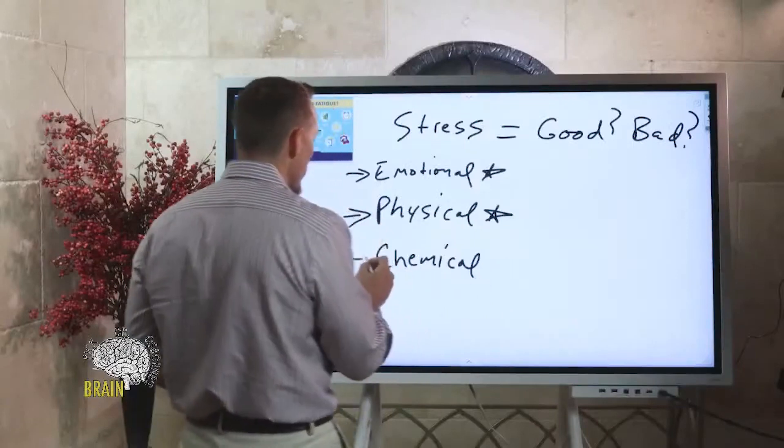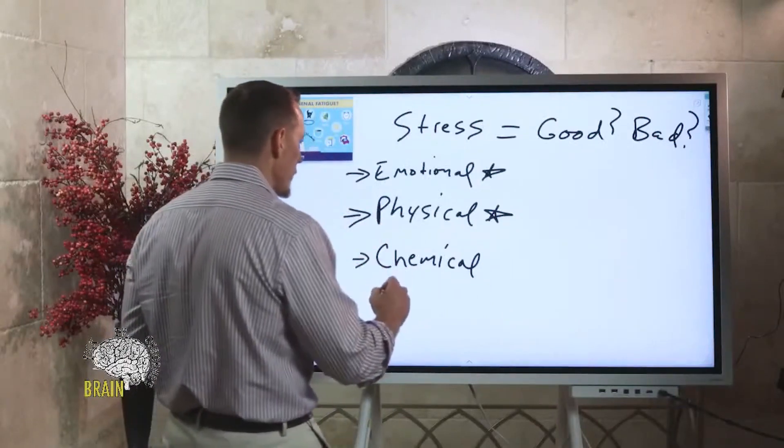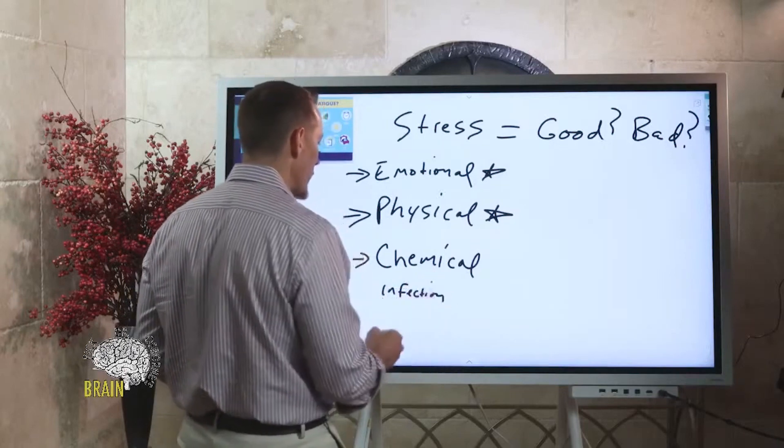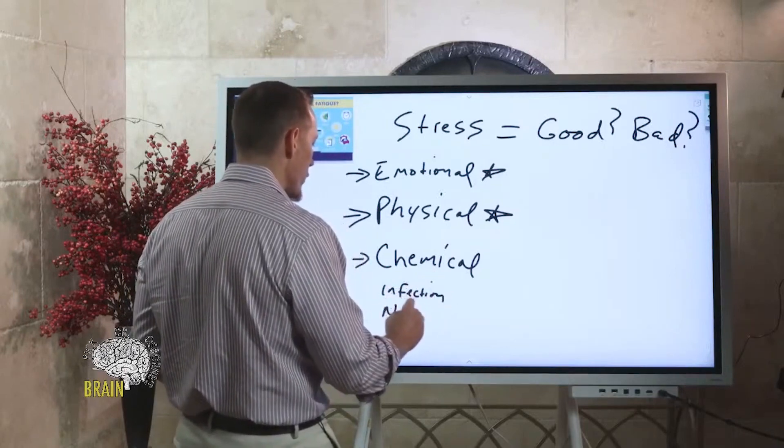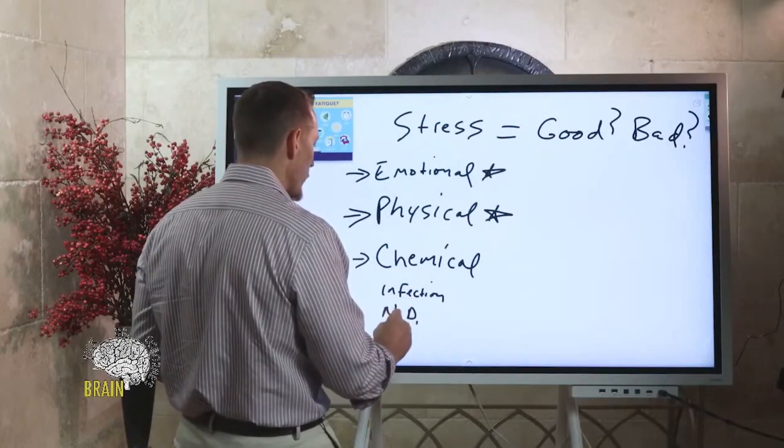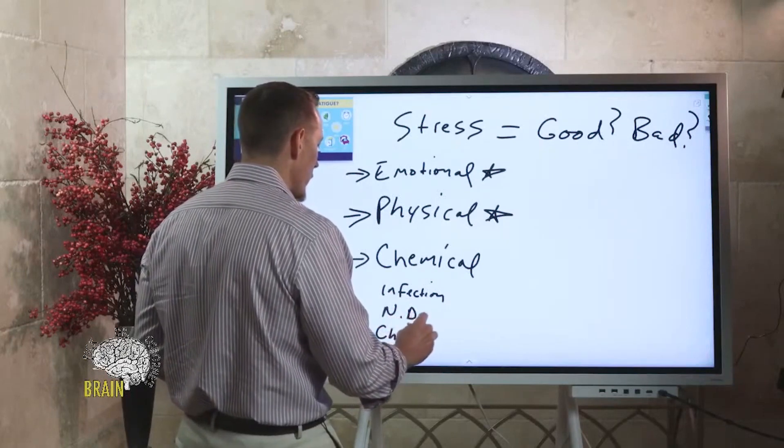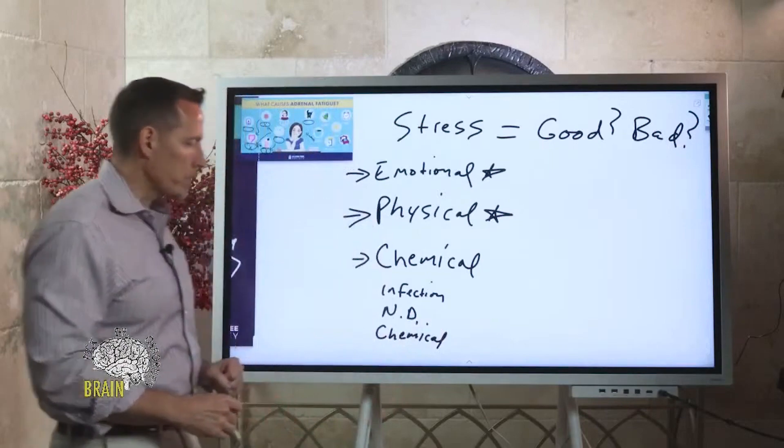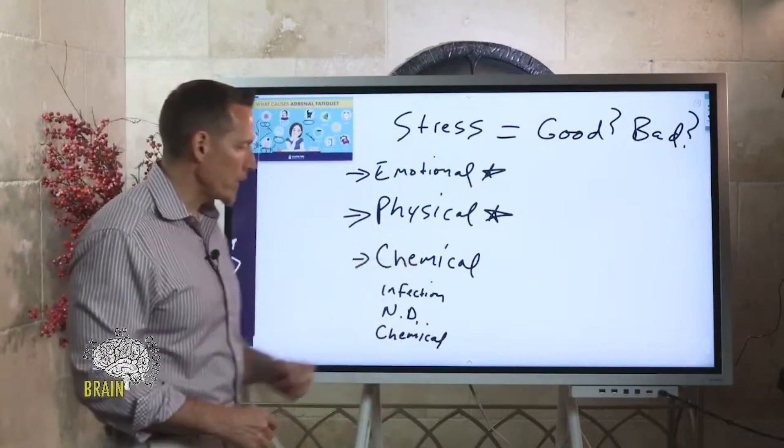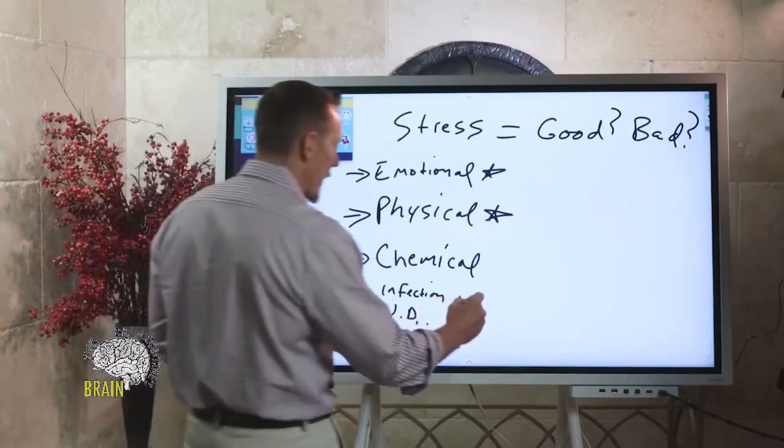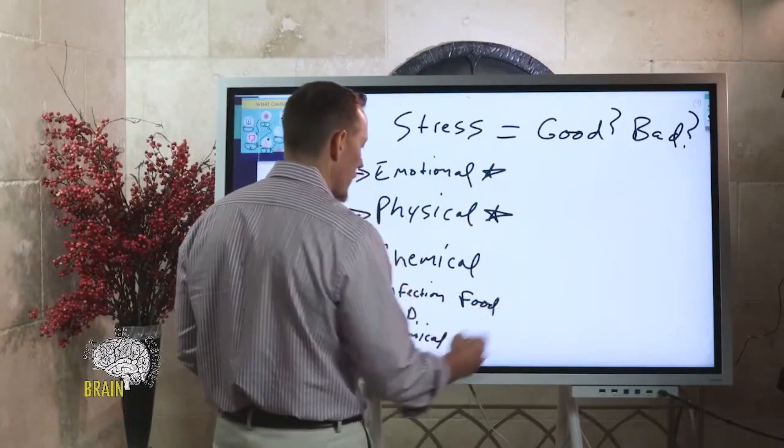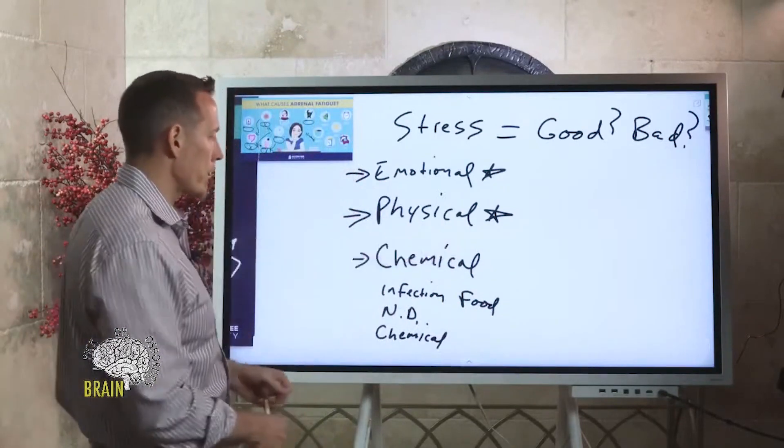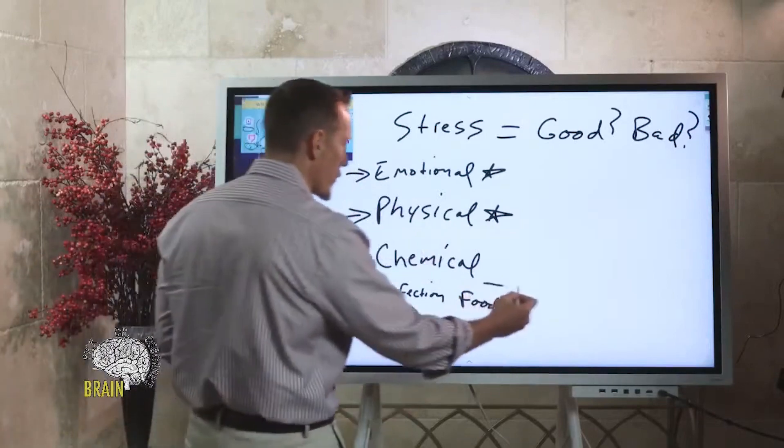Then there's chemical stress. Chemical stressors can be infection, microbial imbalance, nutritional deficiencies, chemical exposures - this could be something like a toxic heavy metal exposure or mold exposure or gluten sensitivity, because food and food reactivity is chemical. It's something you put in your body that affects you in a good or a bad way.